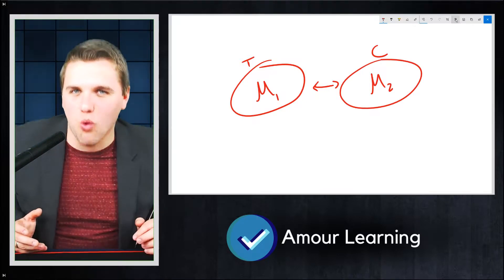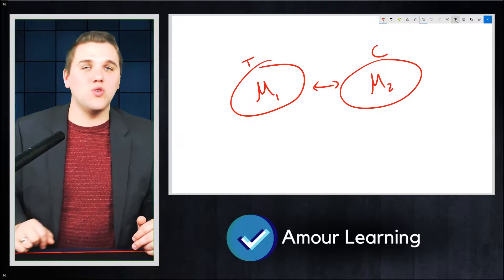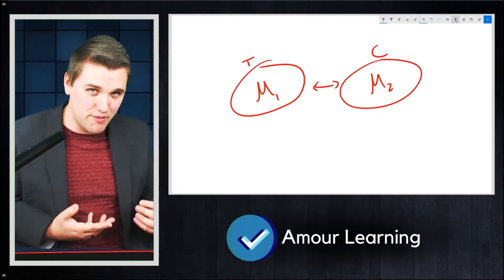Now you can't use a one-sample t-test because you have two samples. And so you use a two-sample t-test to determine whether or not these two averages are different from each other.